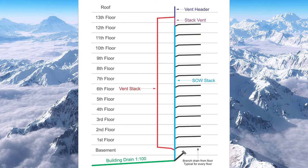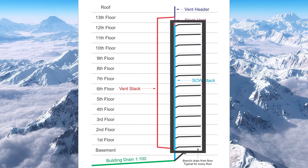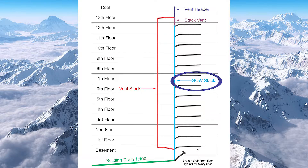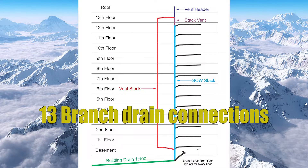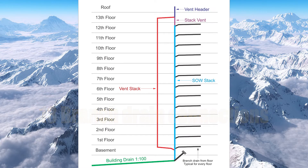If I look at this picture, I'm going to see a bunch of branch drains connected up on the right-hand side of the Soil-and-Waste Stack. If I count those up, I actually have 13, and each one of those represents a floor or a story of a building. If I have more than 11 of those, I need Yolk Vents.